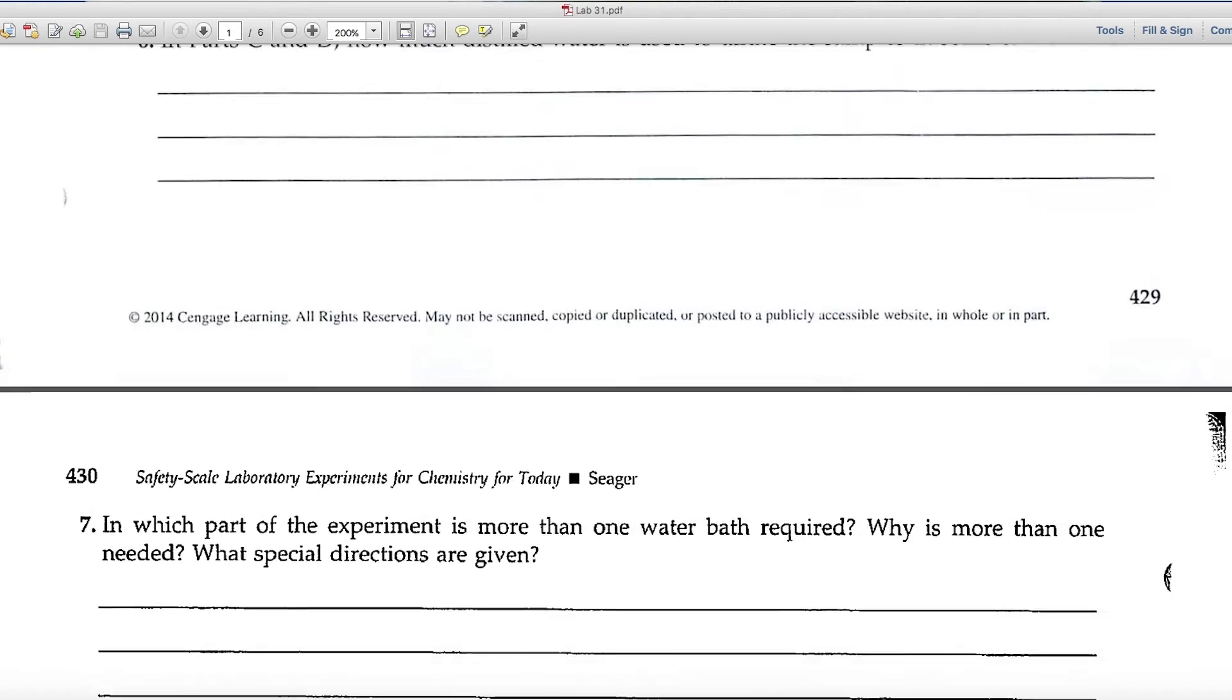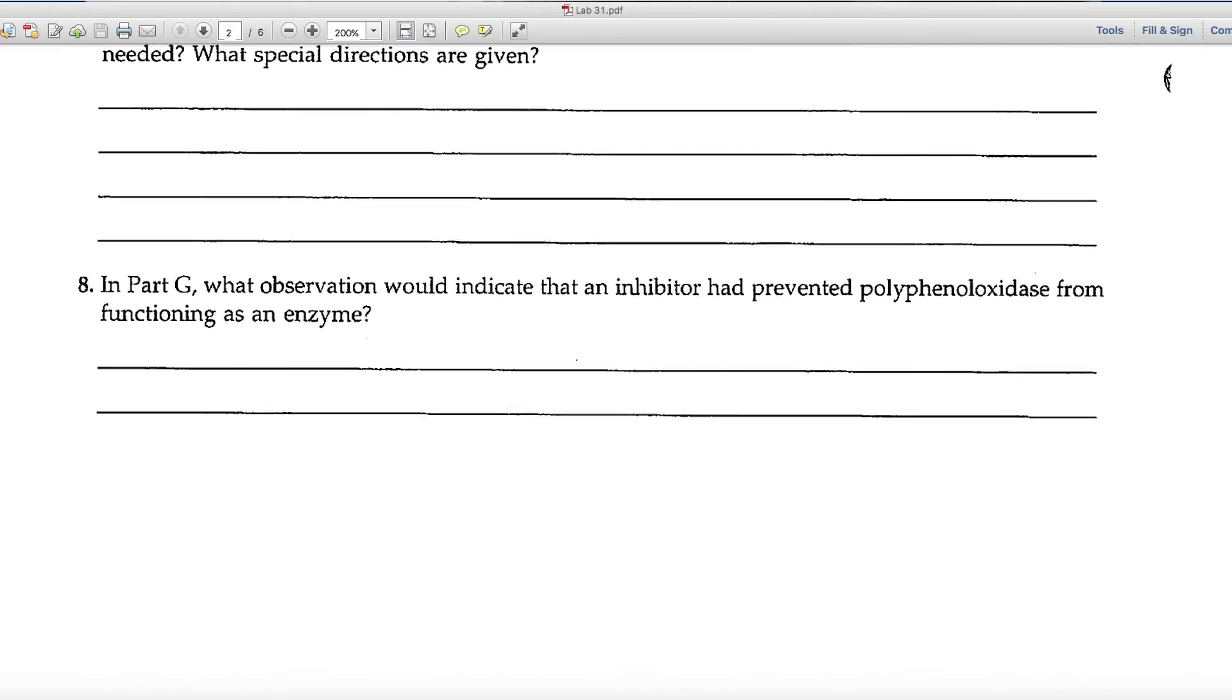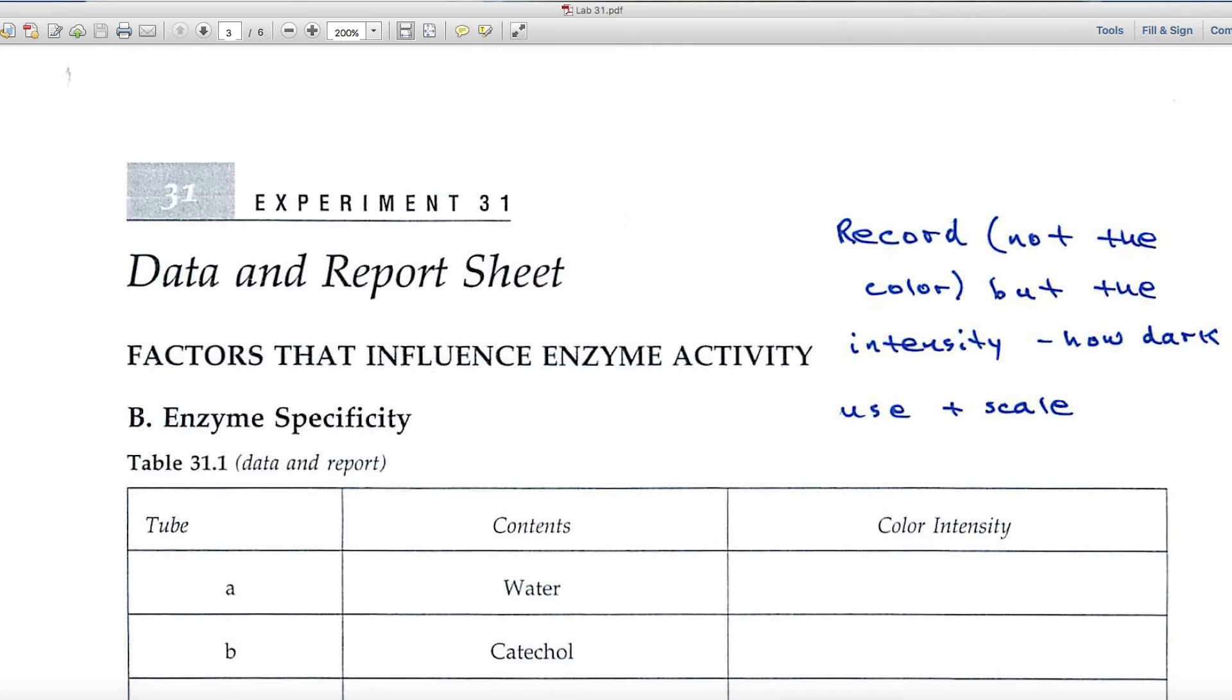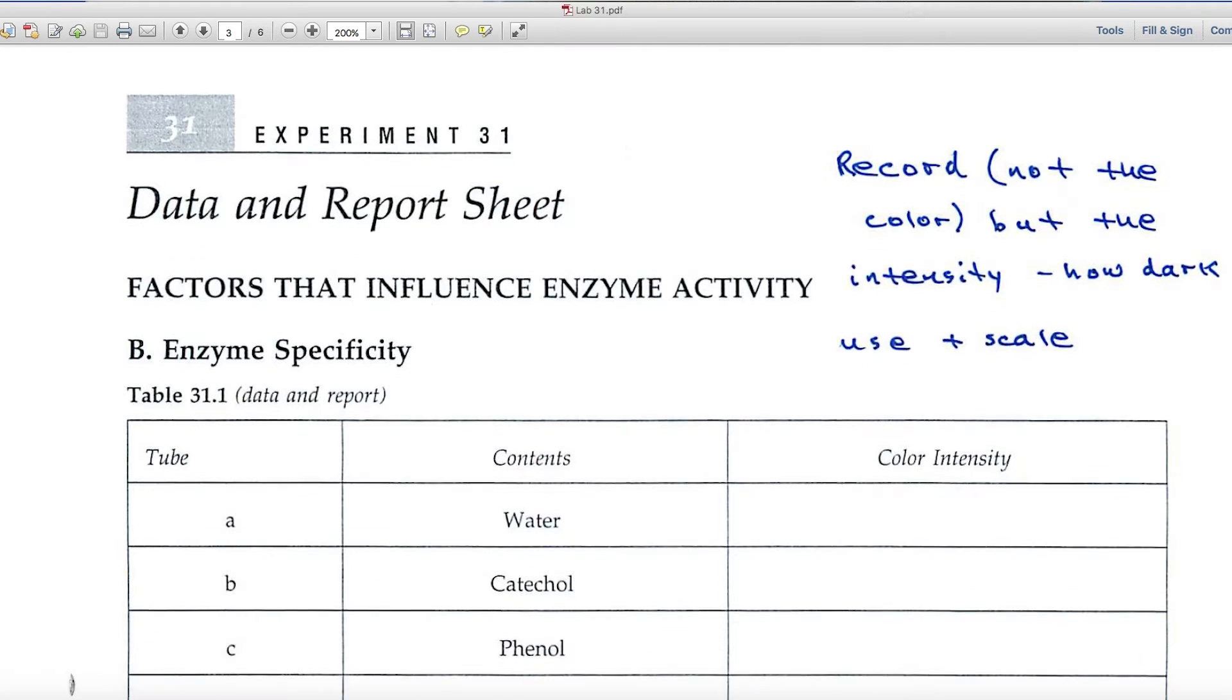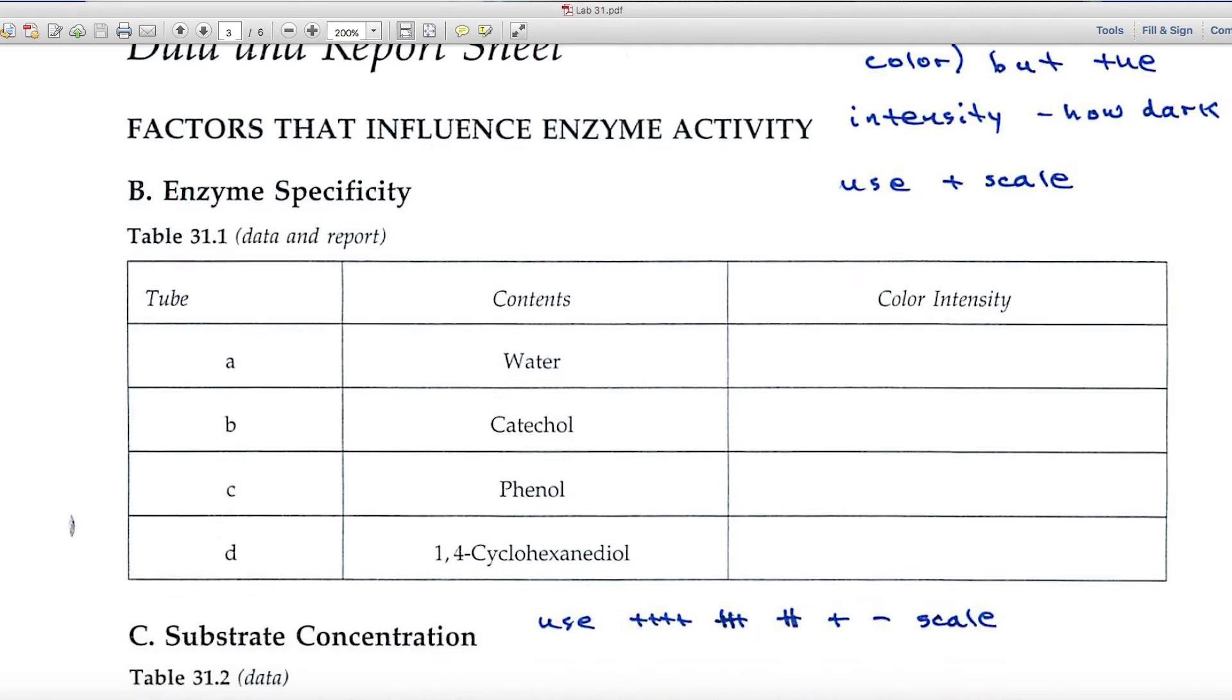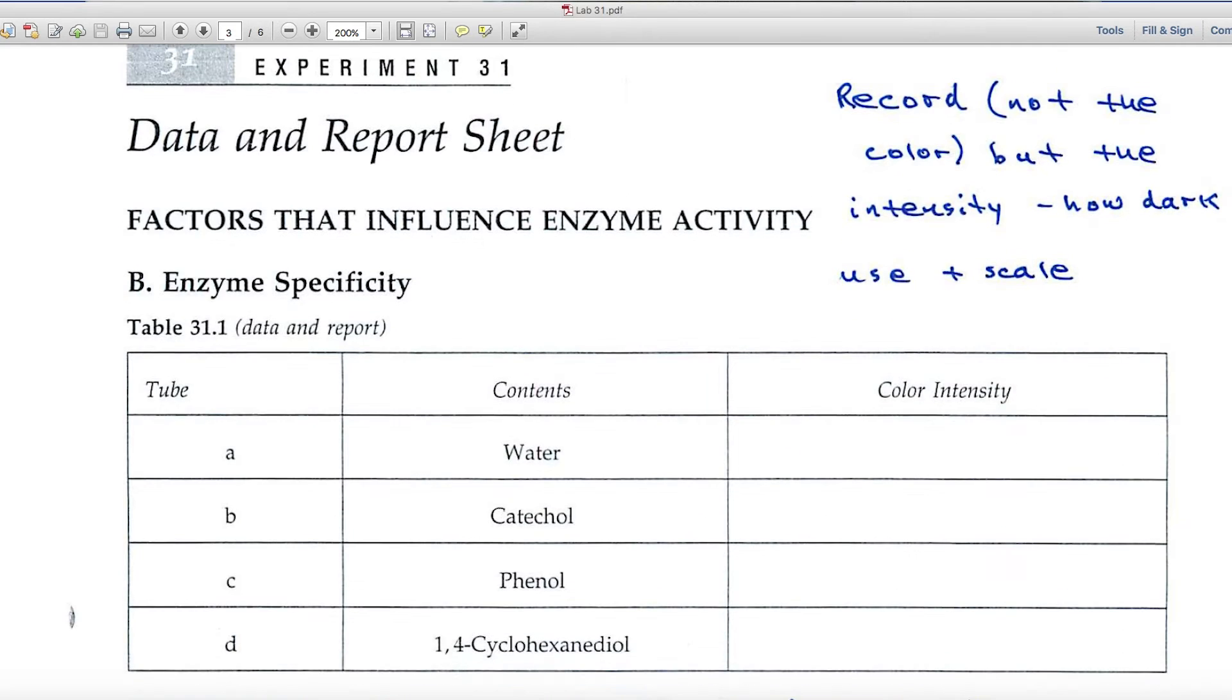The rest of these are pretty straightforward. The pre-lab review pages. Let's have a look at the data and report. In part B, you're looking at enzyme specificity, where we vary the possible substrate. And over here on the right-hand side, you'll record color intensity.